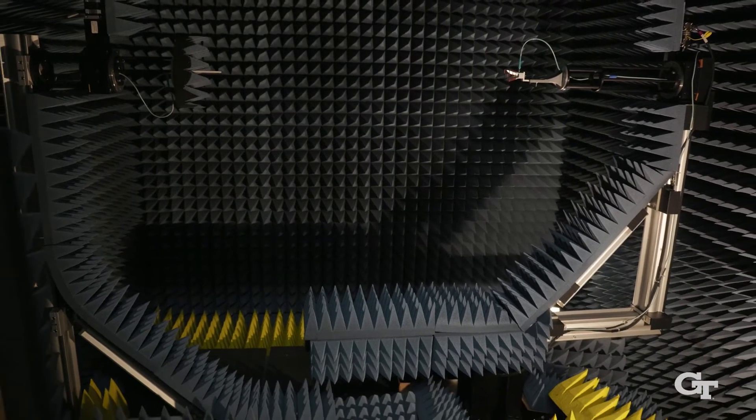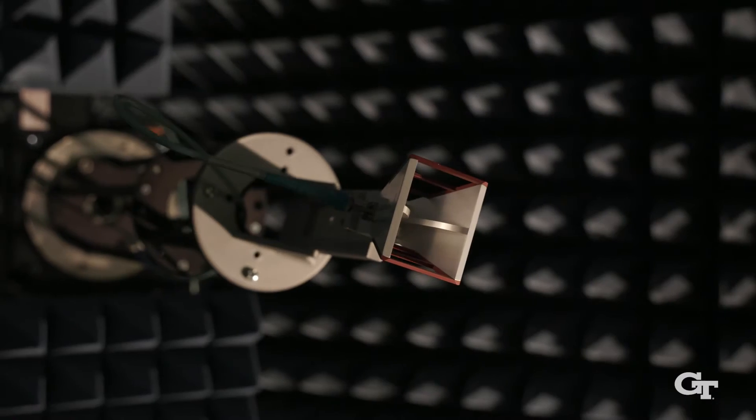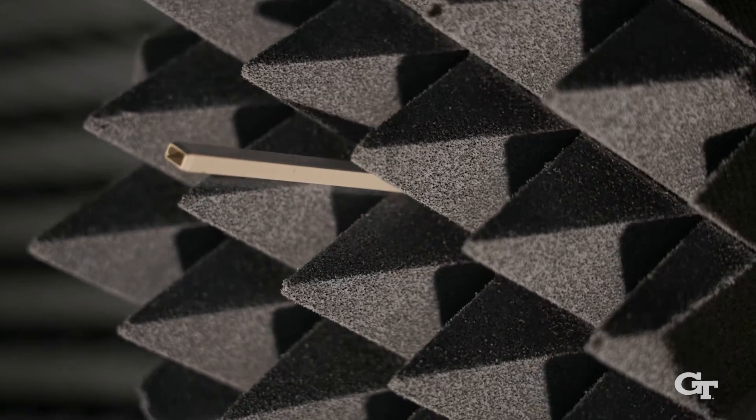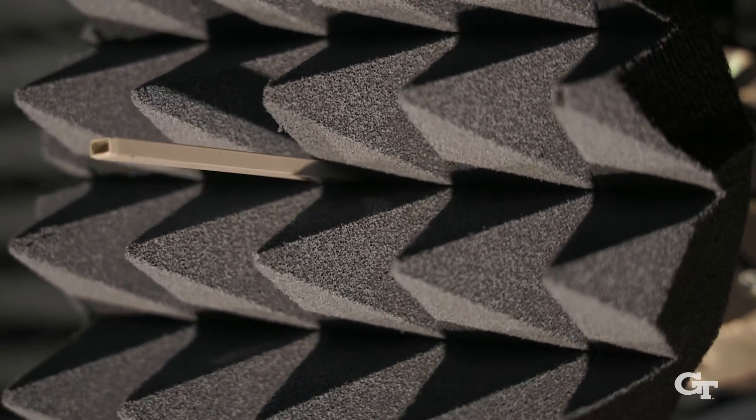Our system is called spherical near-field. A probe antenna with a known gain is positioned in close proximity to an antenna under test. After careful alignment, the antenna is rotated in a spherical pattern around the probe antenna. This setup is called phi over theta.